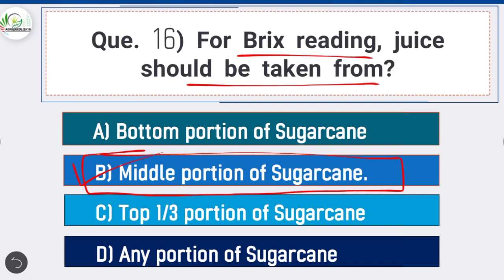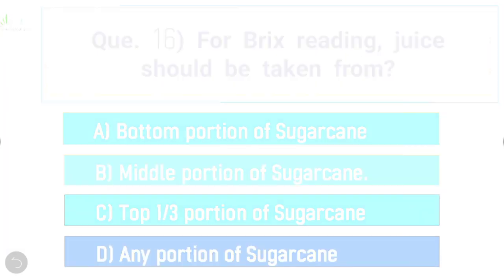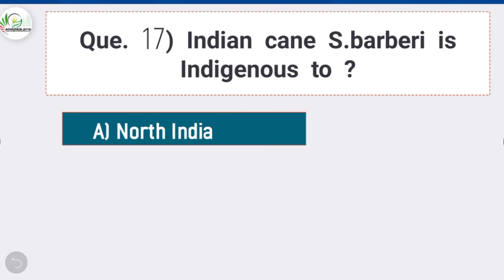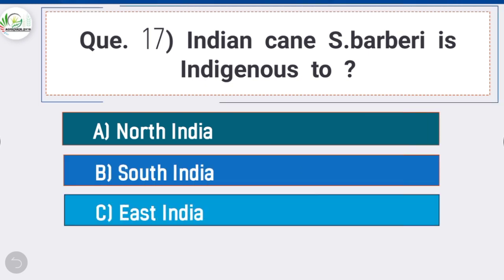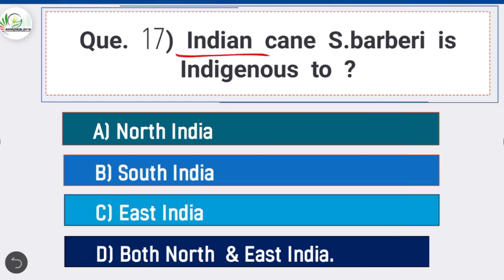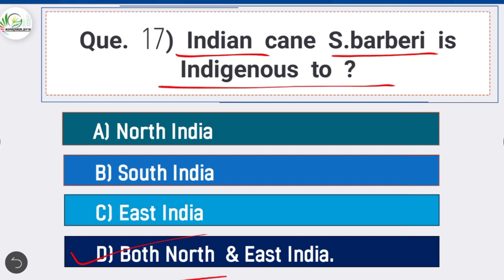Question 17: Indian cane Saccharum barberi is indigenous to — option D is correct: both North and East India.